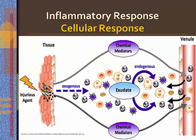Histamine is stored in granules of basophils, mast cells, and platelets, and causes vasodilation and increased capillary permeability. Serotonin is stored in platelets, mast cells, and enterochromaffin cells of the GI tract and causes the same action as histamine, as well as stimulating smooth muscle contractions.